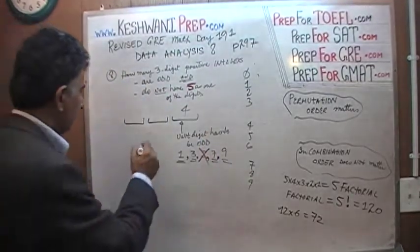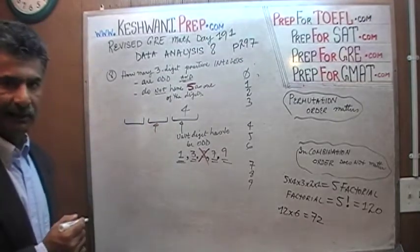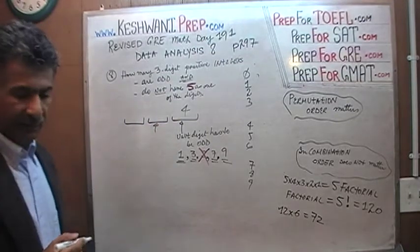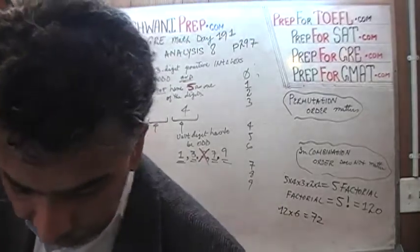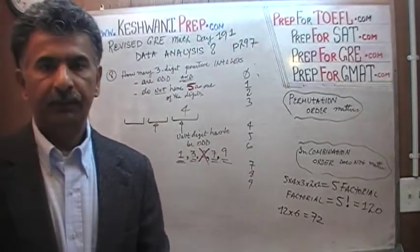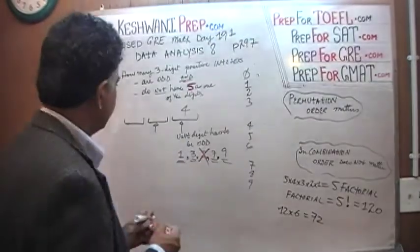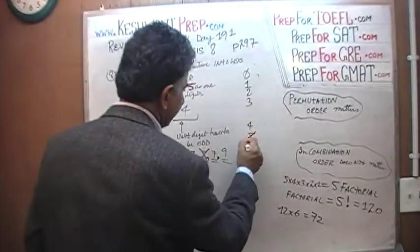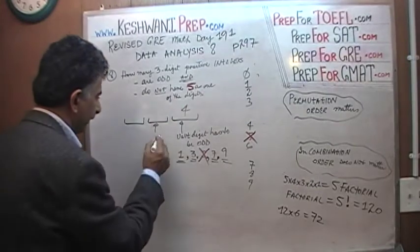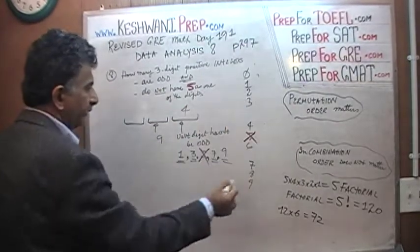Let's find out how many ways we can fill up this spot, the second spot, the tens digit. It has absolutely no restriction other than the fact that you can't have 5. Which means we can have any of these 9 digits here, but we can't have 5. Which means there are 9 ways we can fill it.